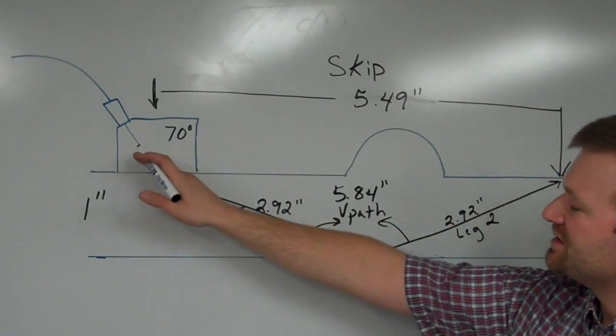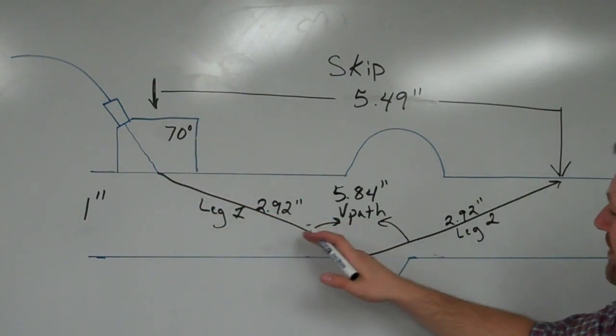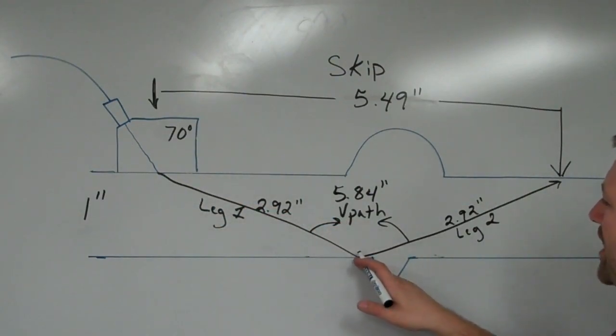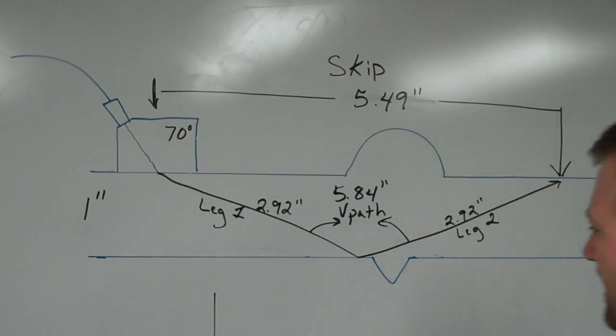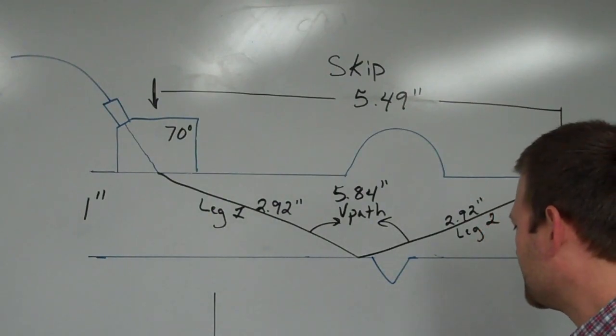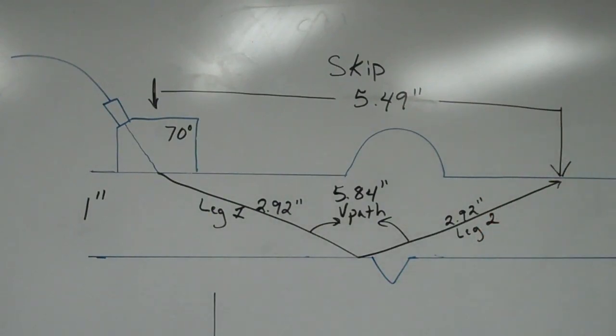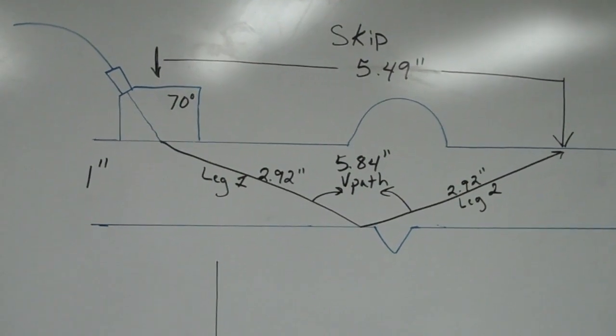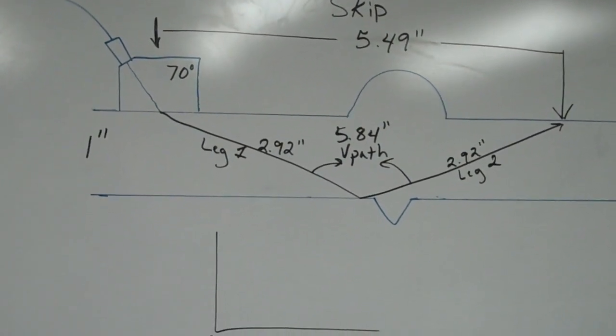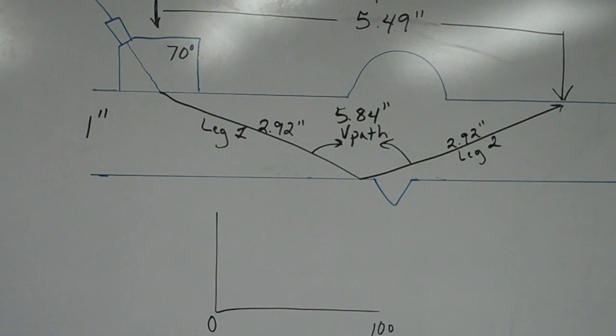From that transducer headed towards the bottom of the plate, and that leg is going to be 2.92 inches long. And we'll go back to the calculations in just a second. Then if that leg bounces, it's going to come back up towards the top again, and it's going to be another 2.92 inches long.